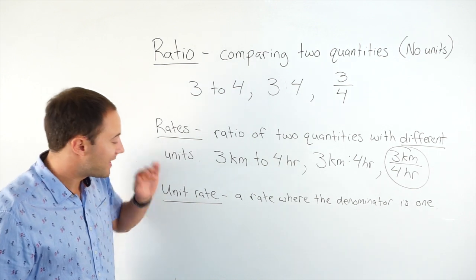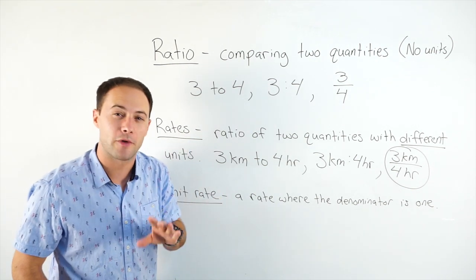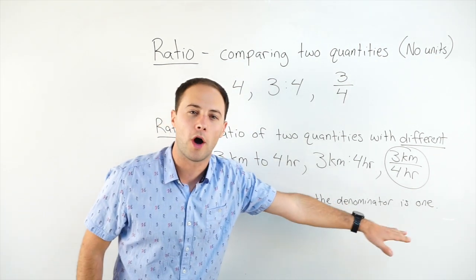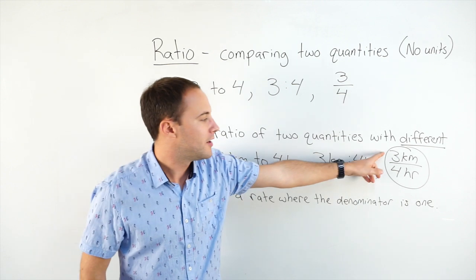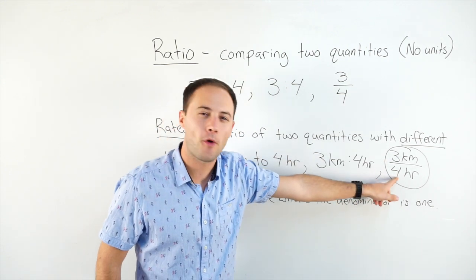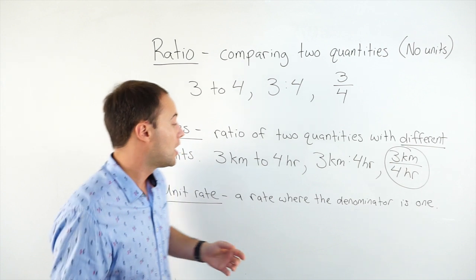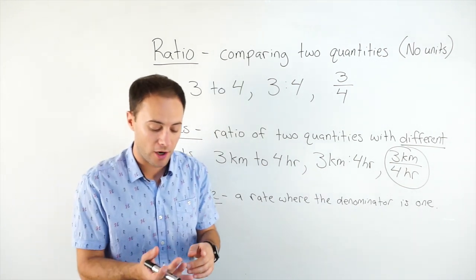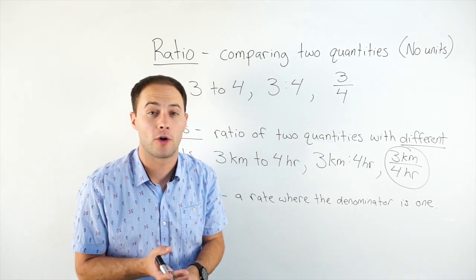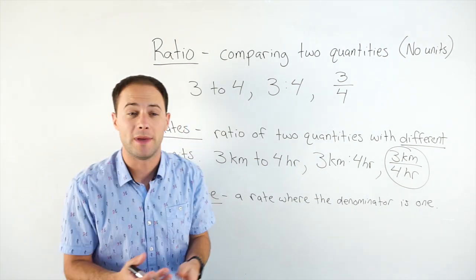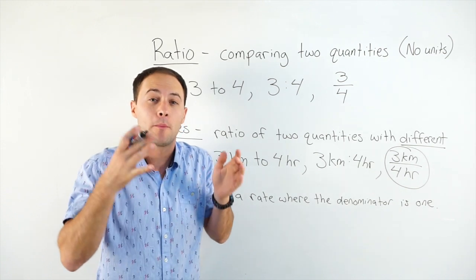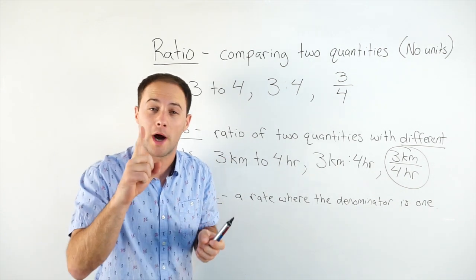Now last, unit rate. Unit rate is a special kind of rate where the denominator is one. So if you look here, if we write it as a fraction, the denominator is four. That's why this is just a rate and not a unit rate. But common unit rates are things like if you go to the grocery store and they say, the meat is $3.25 per pound. That's per one pound.